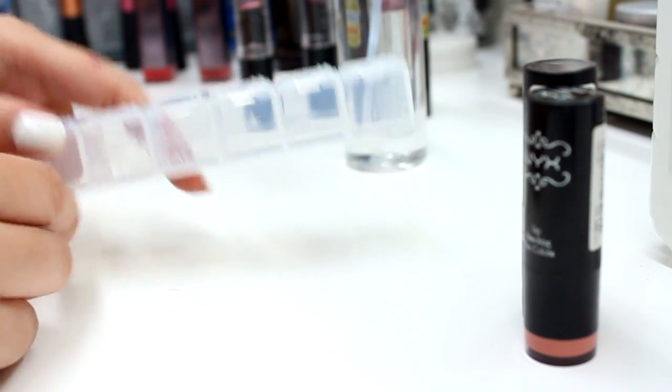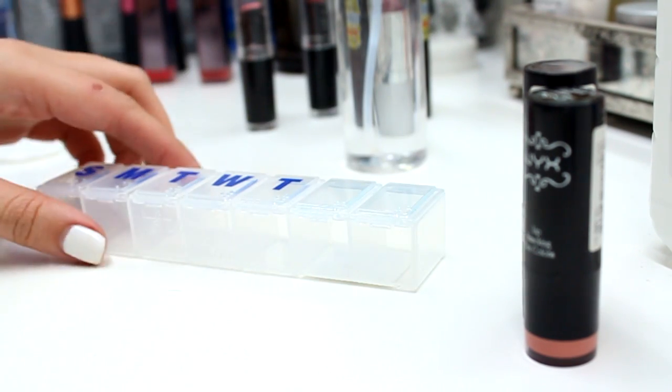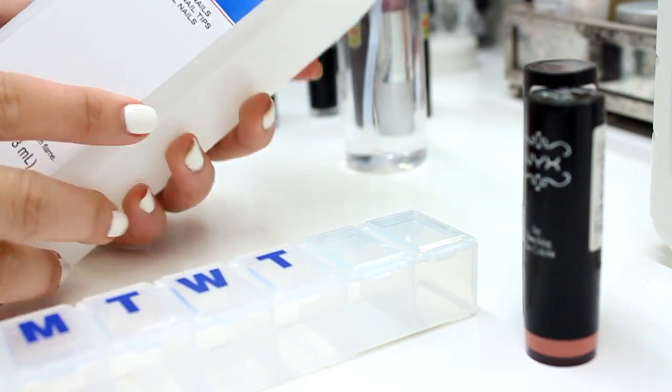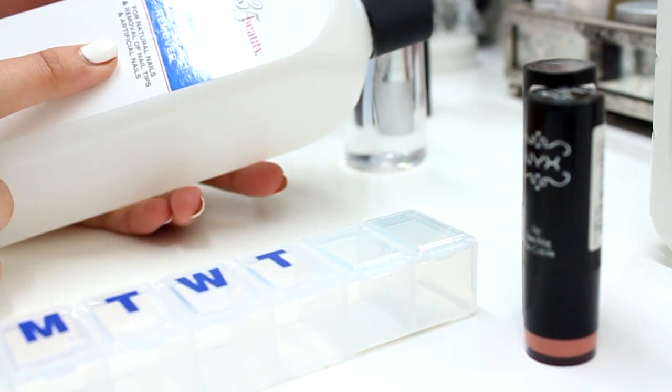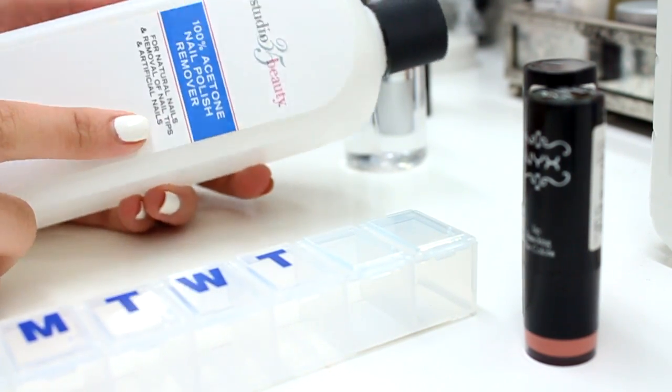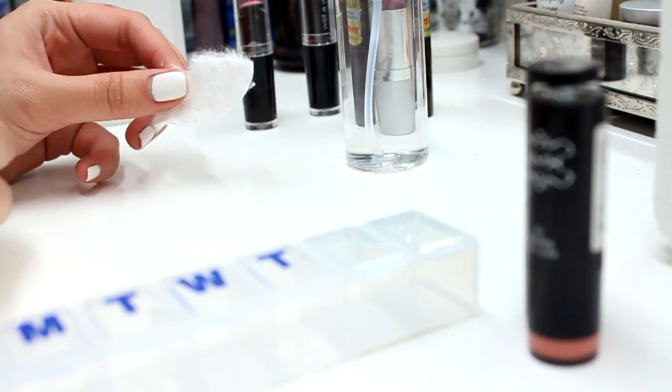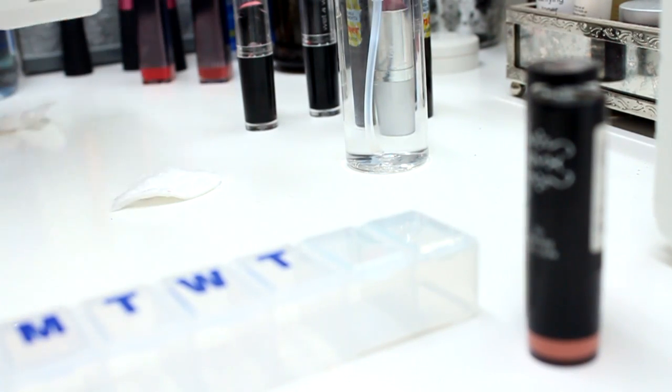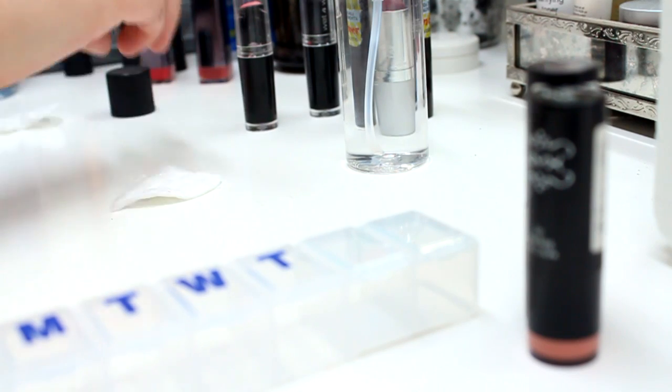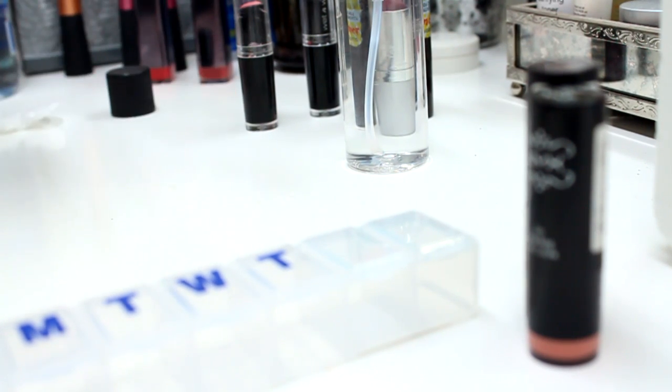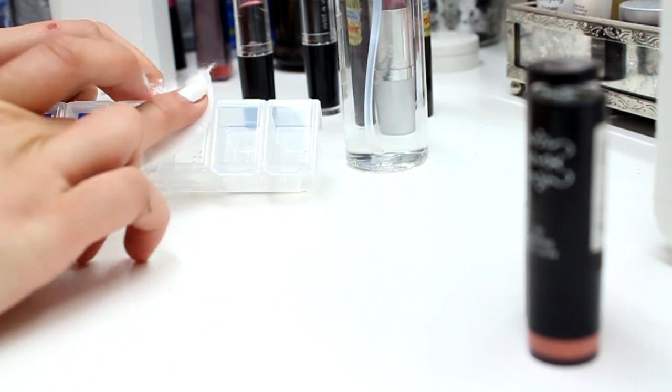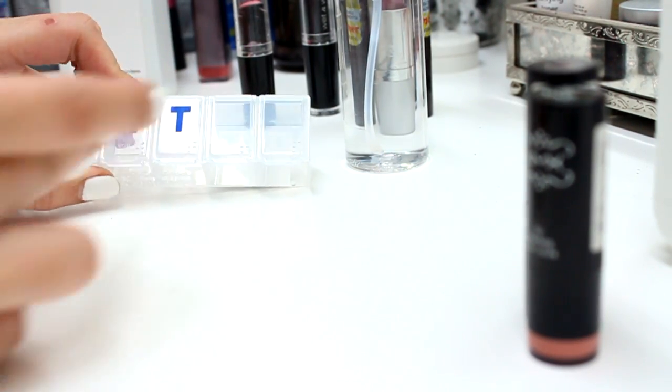Let's get started. You can remove the lettering with acetone or nail polish remover. You're just going to take a little piece of cotton like this, put some acetone on it, and gently start rubbing off the letters.